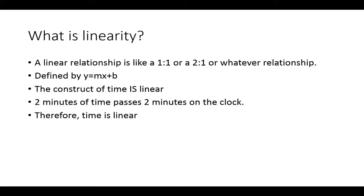A linear relationship is like a one-to-one or a two-to-one ratio or whatever relationship. It's defined as y equals mx plus b, where m is the slope and b is the interception on the y-axis and on the graph.